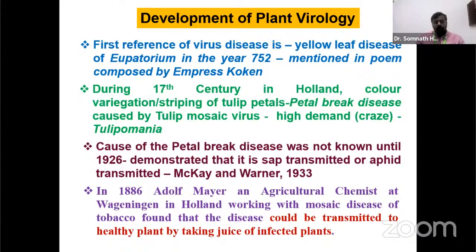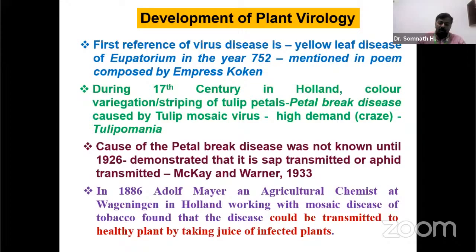The cause of the petal break disease was not known until 1926, and it was demonstrated to be transmitted by two scientists, Mackay and Warner, in 1933. It was later found to be caused by tulip mosaic virus. In 1886, Adolf Mayer, an agricultural chemist in Wageningen, Holland, working with mosaic disease of tobacco, found that the disease could be transmitted from infected plants to healthy plants by taking the juice of the infected plants.